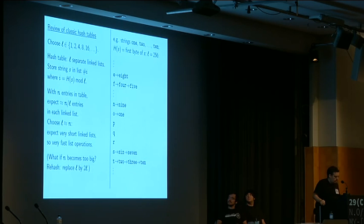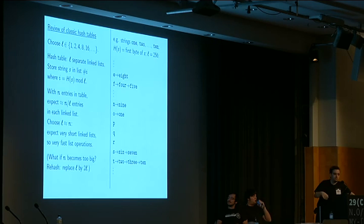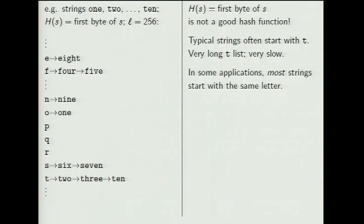Now, if you just choose your hash function to take the first byte of a string, and try storing the ASCII strings ONE, TWO, THREE — ten strings in a hash table of size 256 — there's a pileup on the T pointer: TWO, THREE, and TEN all hash to T because the hash just takes the first byte. This is not a good hash function. In some applications practically every string has a fixed first byte, and they all pile up on one linked list.